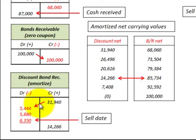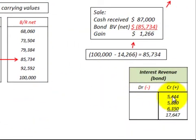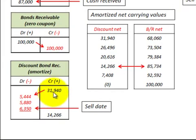We use the beginning carrying value of that bond times the market rate of interest for that year, and that is what our discount amortization amount would be. We debit the carrying value times the market rate of interest for that interest revenue, and credit interest revenue — that is the discount to bonds receivable amount. At the end of the third year, we've realized $17,647 worth of revenue, and the discount to bonds receivable has been amortized down to a carrying value of $14,266.